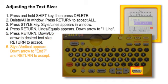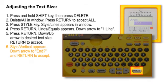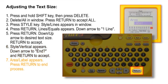STYLE VERTICAL appears in the window. Using the DOWN ARROW key, scroll down until END appears. Press RETURN. AREA LABEL appears. Press RETURN and you have completed the process.